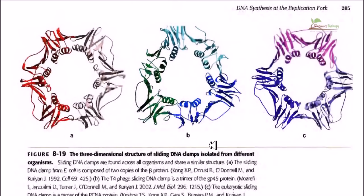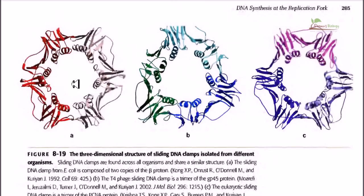Looking at the beta clamp protein, we can see three-dimensional models of beta clamp proteins showing alpha helix and beta sheet structures. One remarkable thing we notice across all these beta clamp proteins — whether in prokaryotes or eukaryotes — is a striking structural similarity. In E. coli, the beta clamp is made up of two different types of protein subunits with three copies of each, giving six subunits altogether to make a properly functional beta clamp.